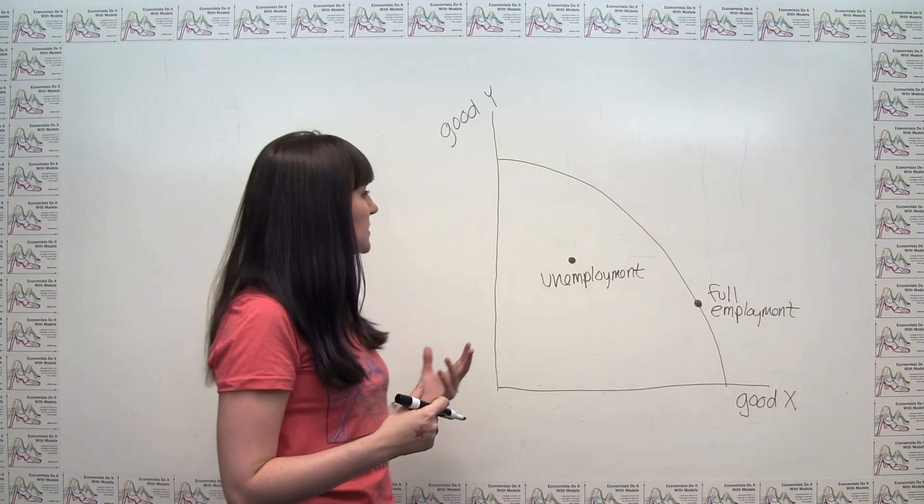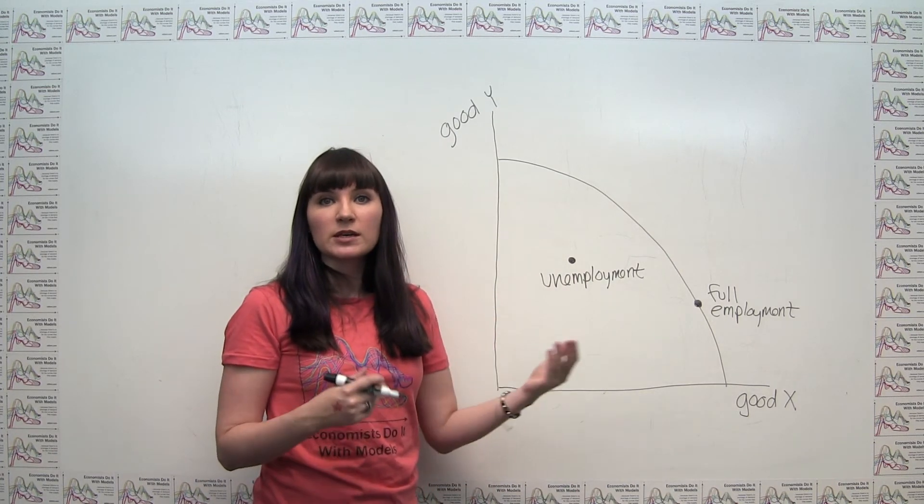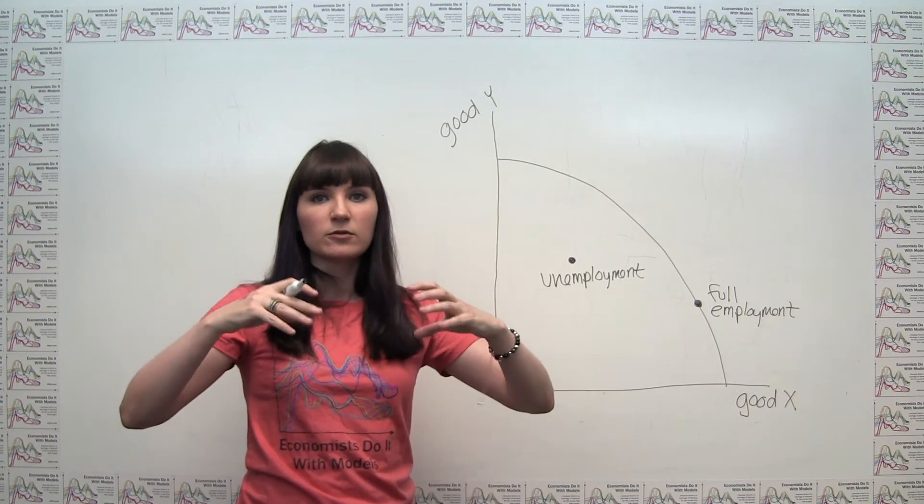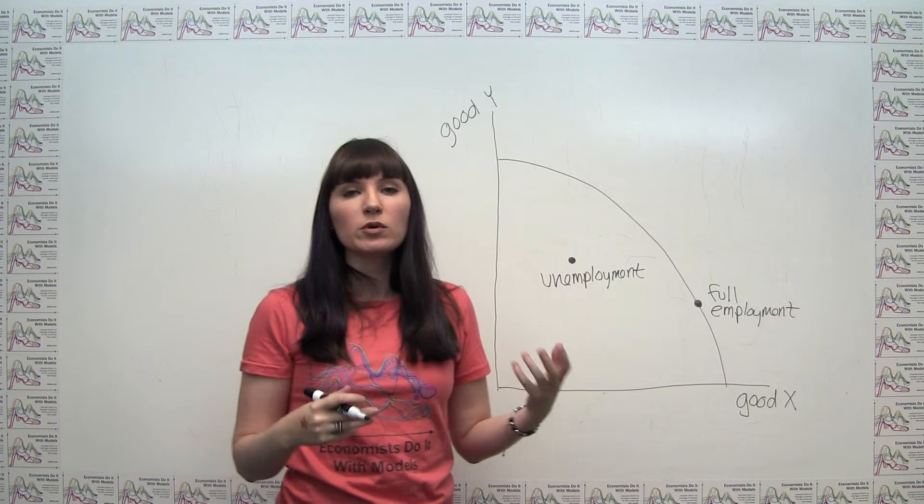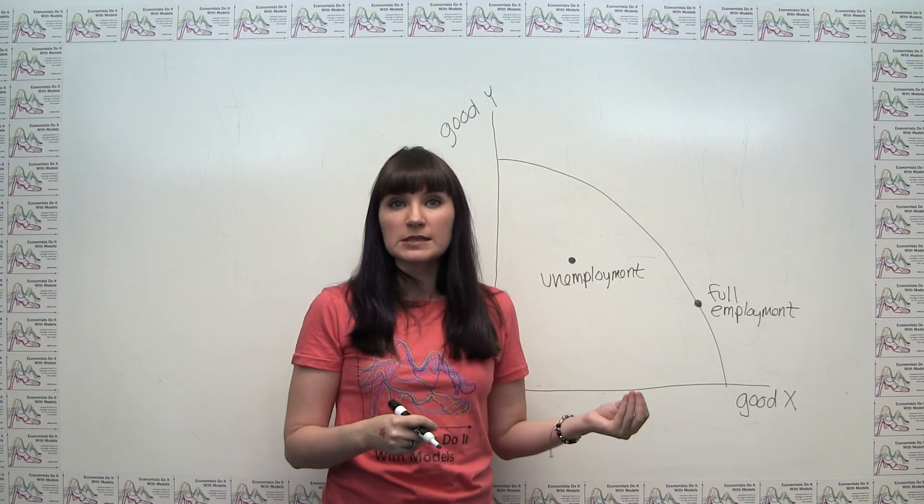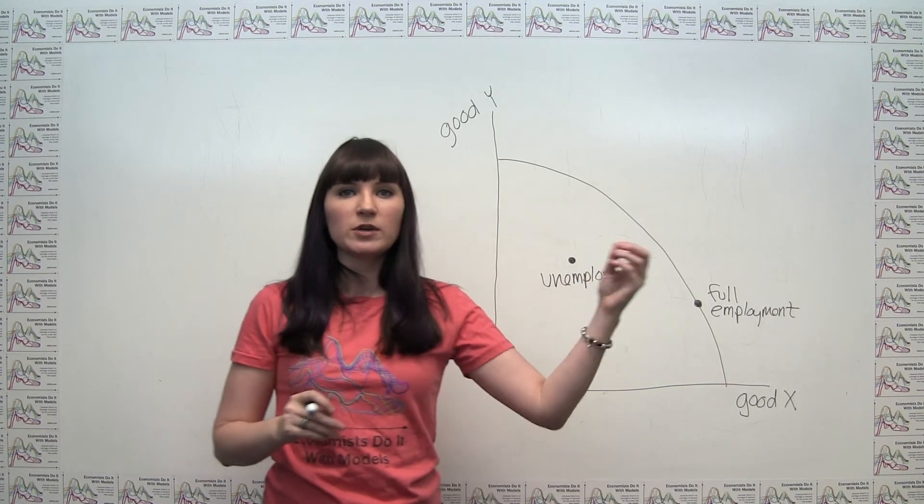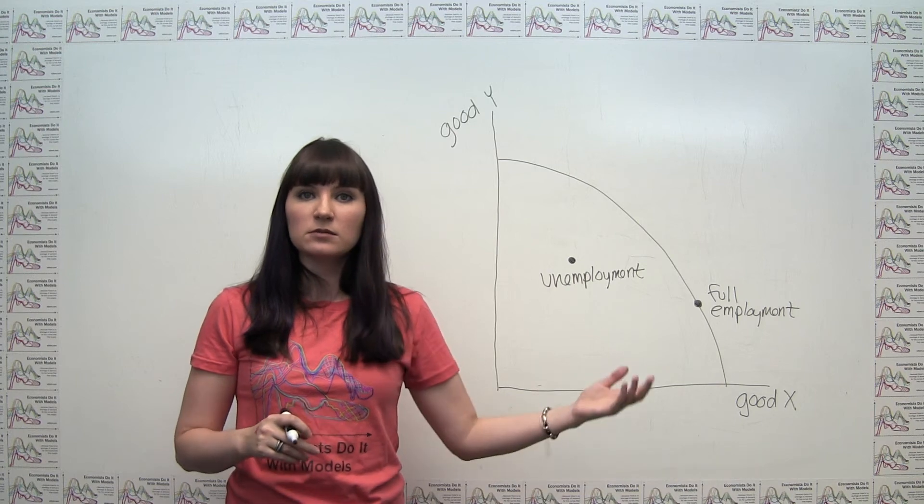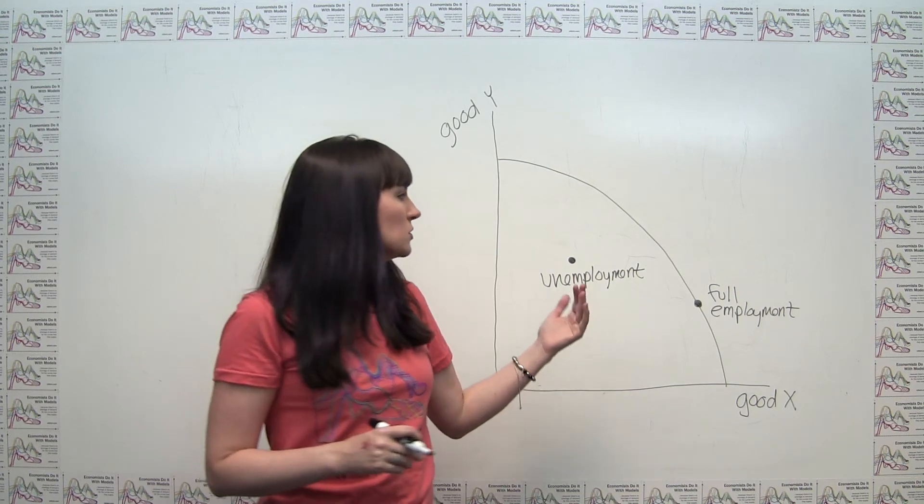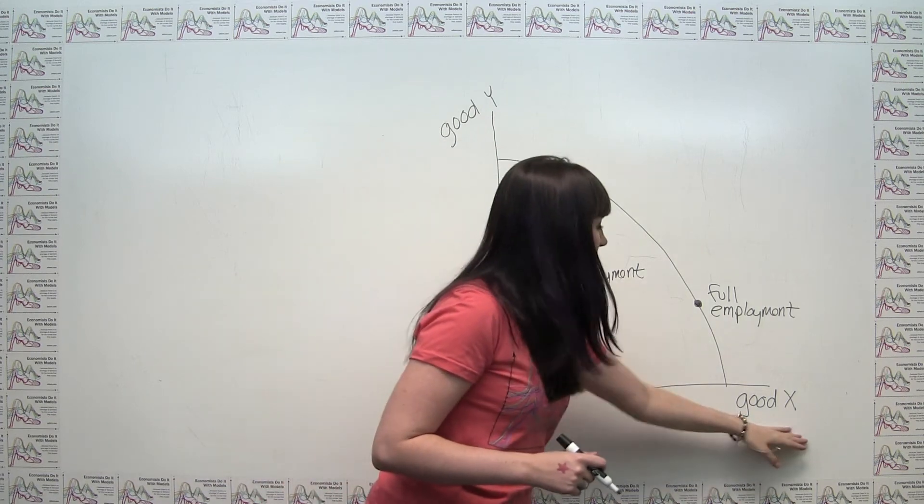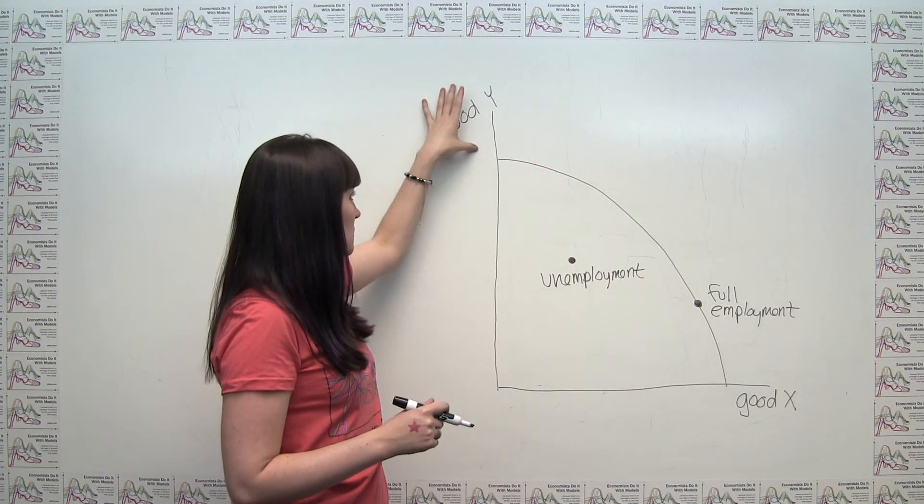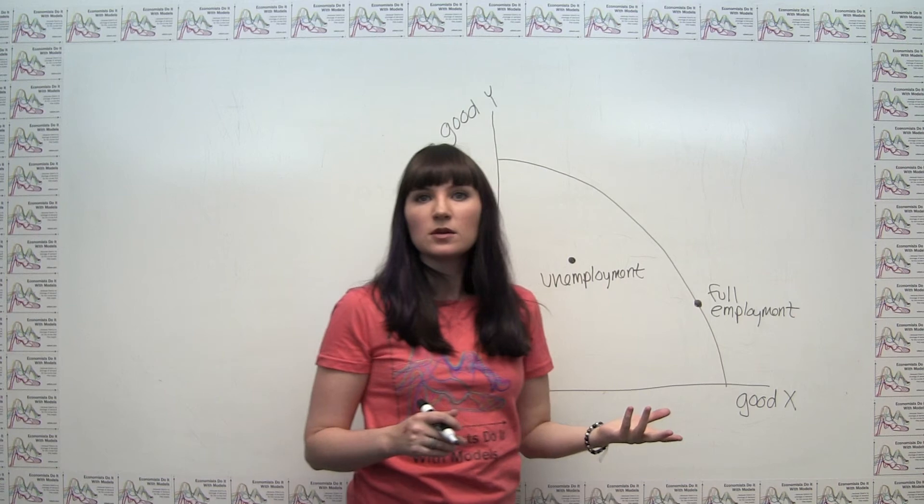So what that implies is that if everyone is working harder, we still have a fixed level of resources, we still have a fixed number of people, but we're able to get more production out of those resources. And that's going to shift the production possibilities frontier outward.